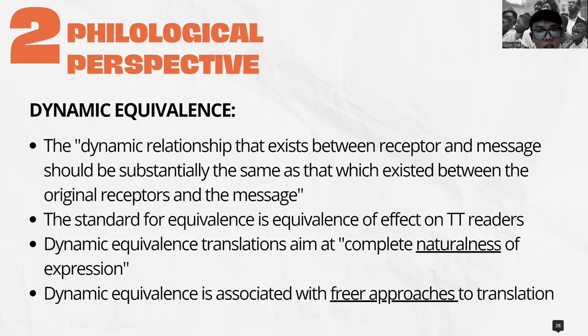On the other hand, Nida opposed this to dynamic equivalence. Dynamic comes from the description of the dynamic relationship that exists between receptor and message. He said that the dynamic relationship should be substantially the same as that which exists between the original receptor and the message. The standard for dynamic equivalence is equivalence of effect — we want the target text readers to experience the text the same way the source text readers did.